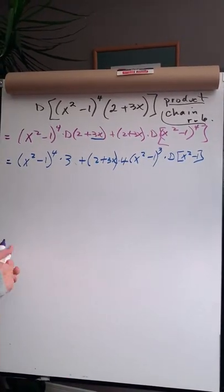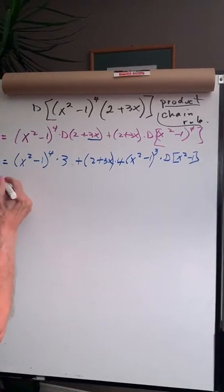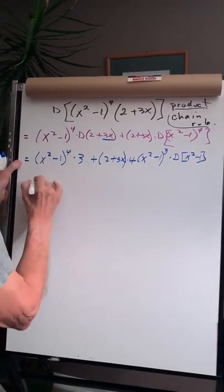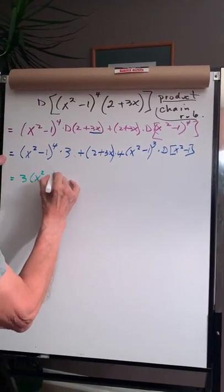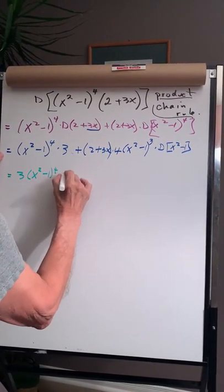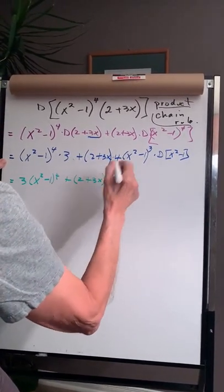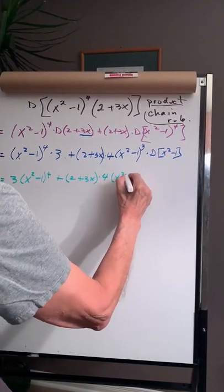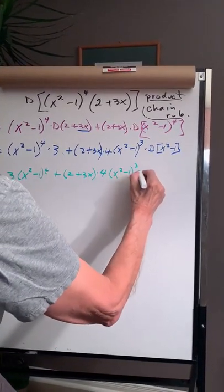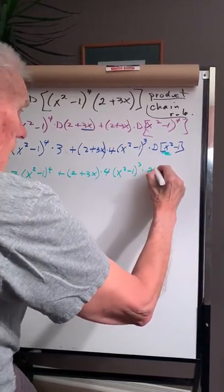Okay, the next problem is we have to take the derivative of this and leave everything else alone. So this over here is the same as 3 times x squared minus 1 to the 4th, plus 2 plus 3x. I can put the 4 in the front, I didn't, x squared minus 1 cubed, and the derivative of this is 2x.